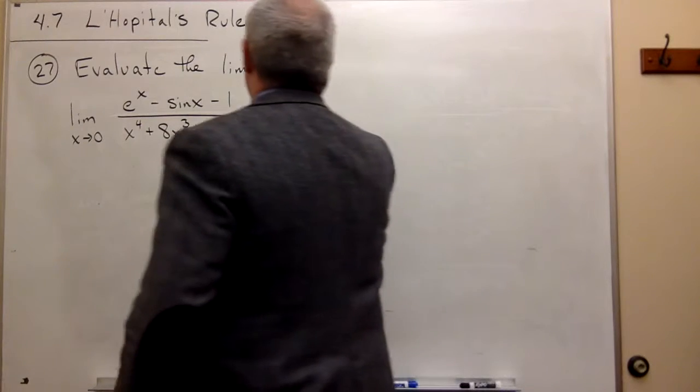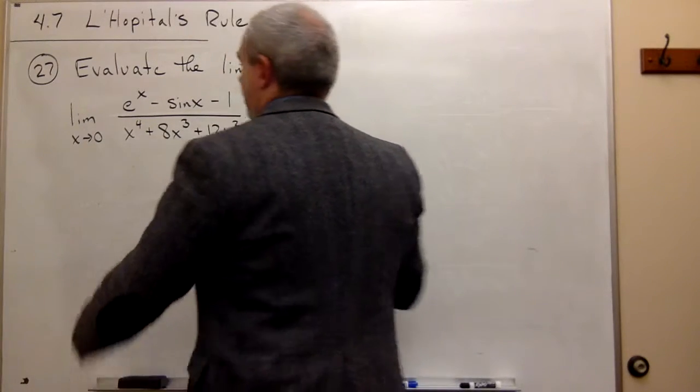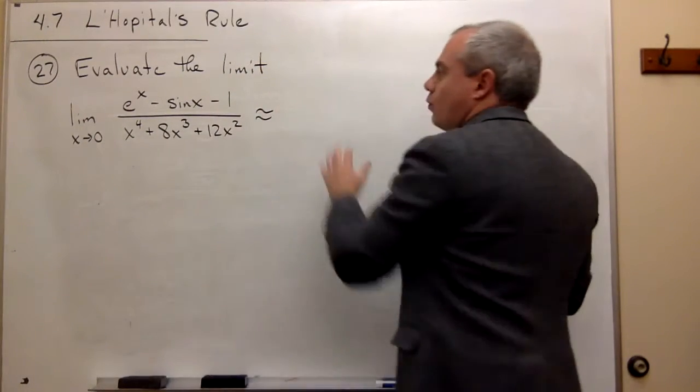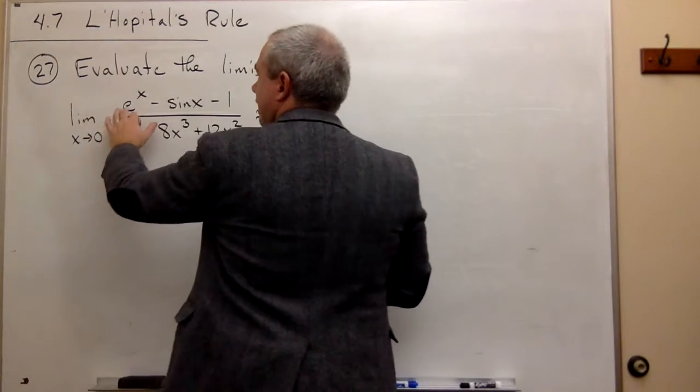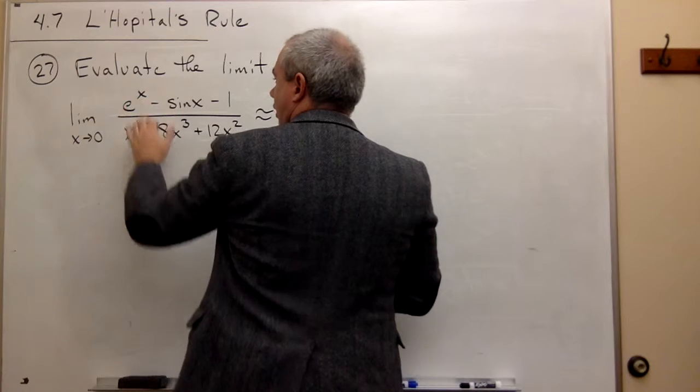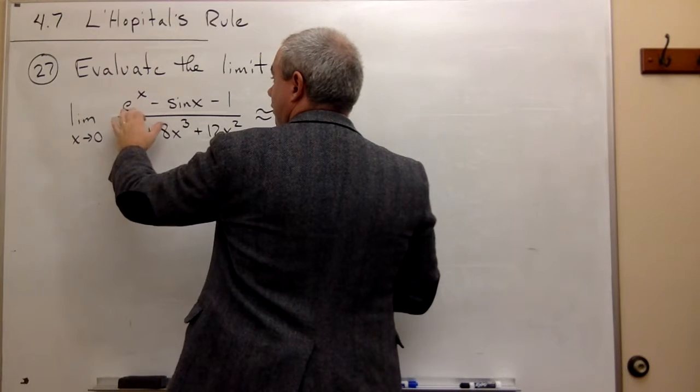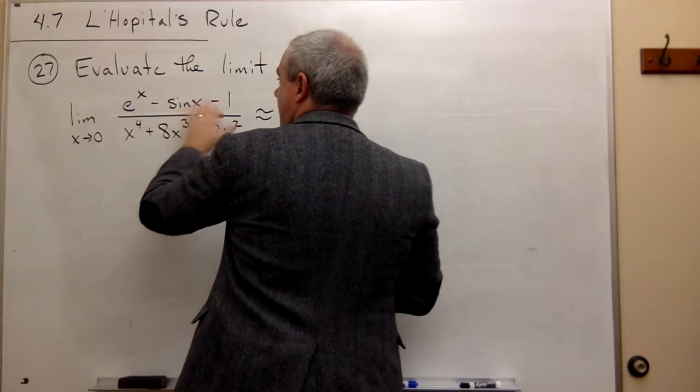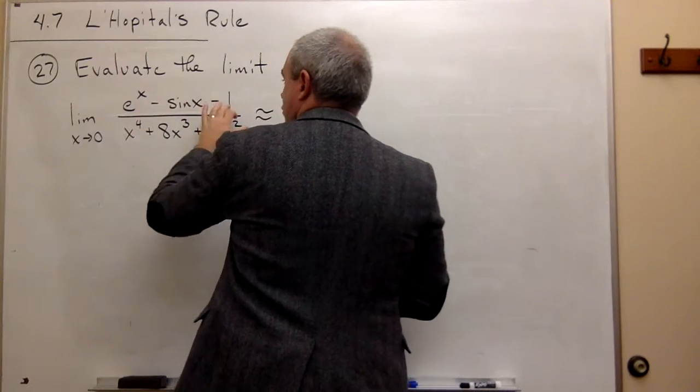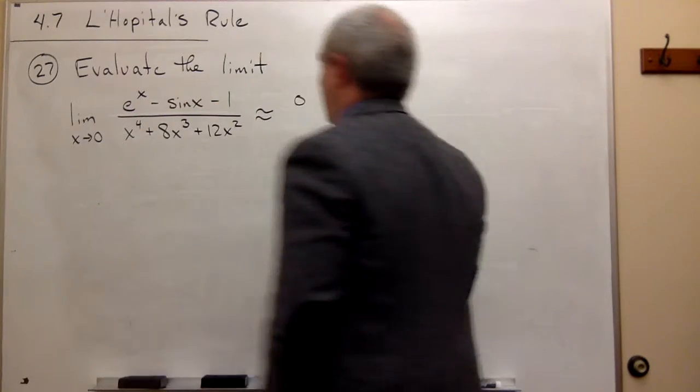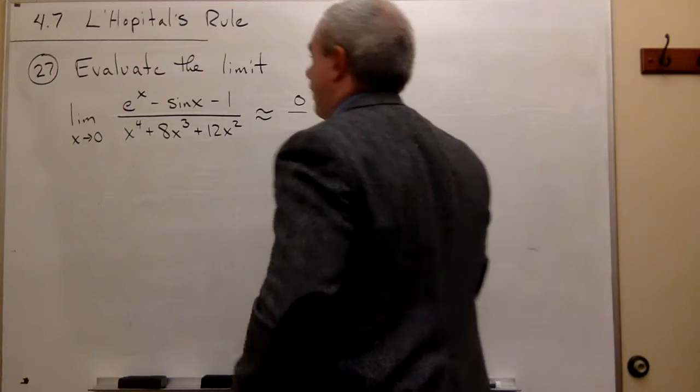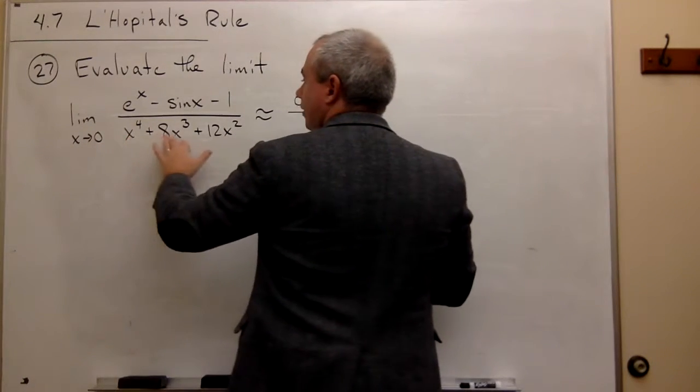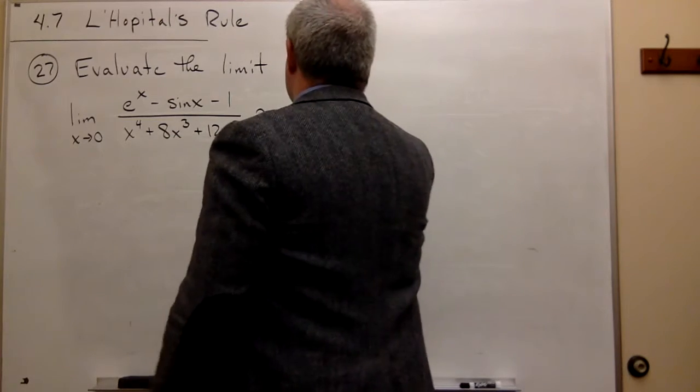First thing I'm going to do is plug in 0 to the top and bottom and just see what the form is. If I plug in 0, I get e^0 which is 1, minus sin(0) which is 0, minus 1. So I get 1 minus 1, which is 0. On the bottom, if I plug in 0, I get 0 plus 0 plus 0, which is 0.